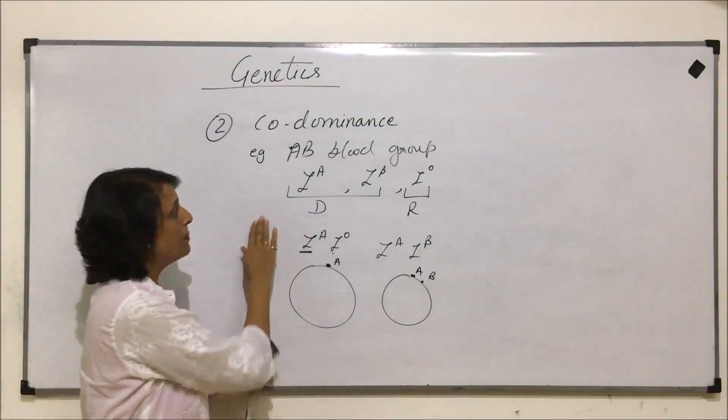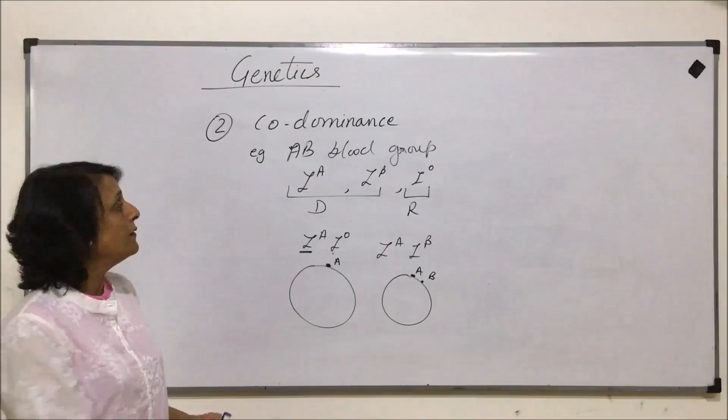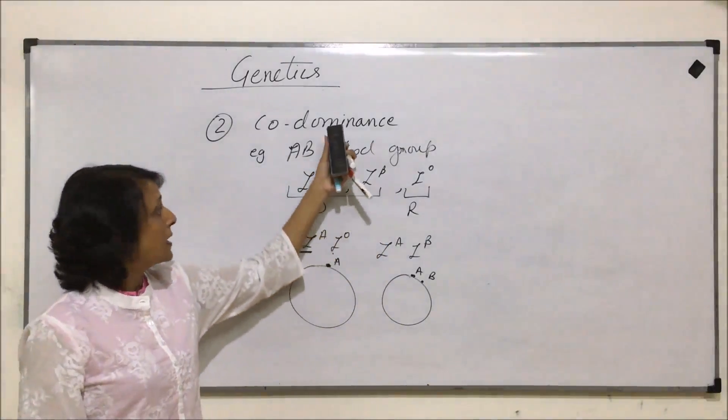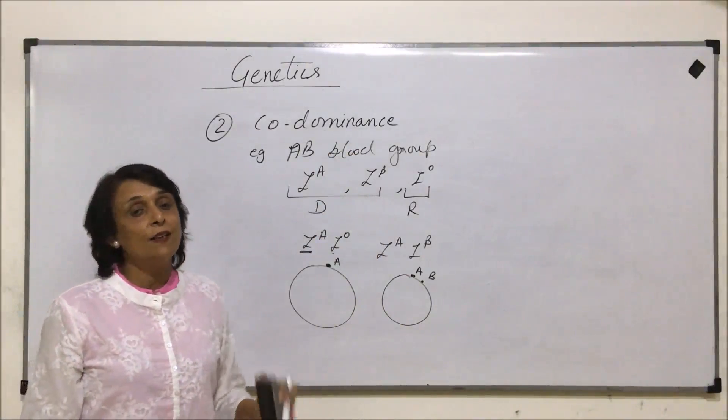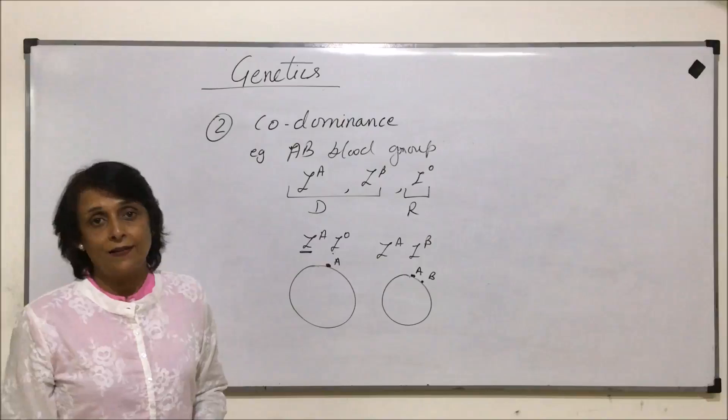In co-dominance, we take two examples: AB blood group in humans (specifically AB blood group which is expressed by co-dominance), and the previous example of coat color in cattle.